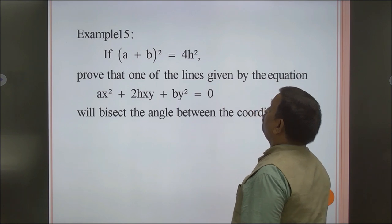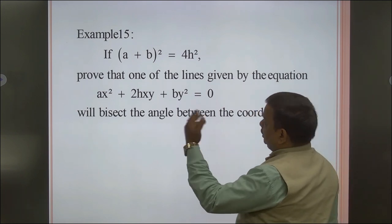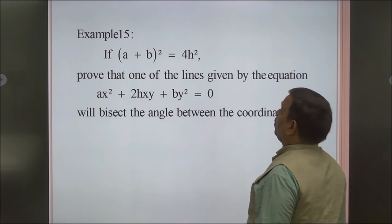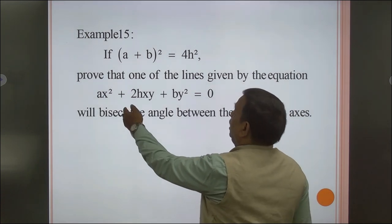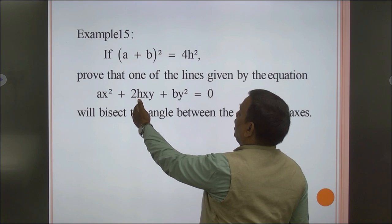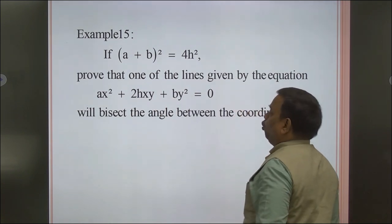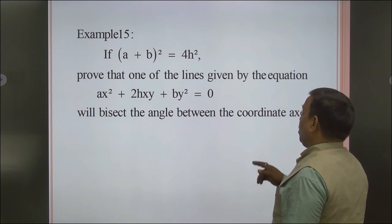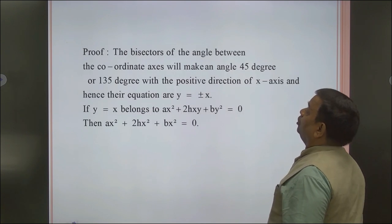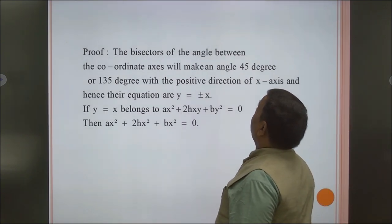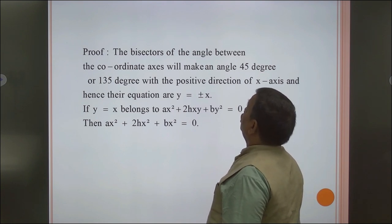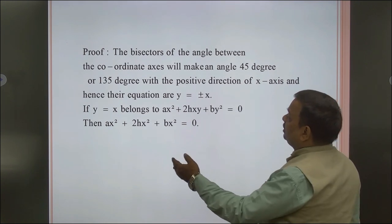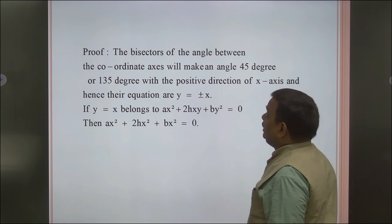Next question: if (a + b)² = 4h², prove that one of the lines given by the equation ax² + 2hxy + by² = 0 will bisect the angle between the coordinate axes. The bisector of the angle between coordinate axes will make an angle of 45° or 135° with the positive direction of the x-axis, and hence the equation is y = ±x.